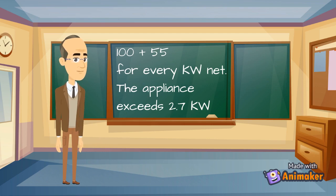We add 55 centimeters squared for every kilowatt net the appliance rated input exceeds 2.7 kilowatts.